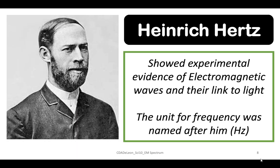Heinrich Hertz showed experimental evidence of electromagnetic waves and their link to light. He was a German physicist who was the first to conclusively prove the existence of electromagnetic waves predicted by James Clerk Maxwell's equations. The unit for frequency, Hertz, was named after him.